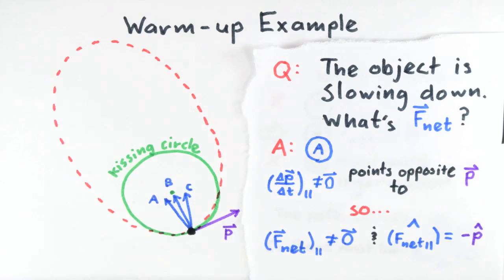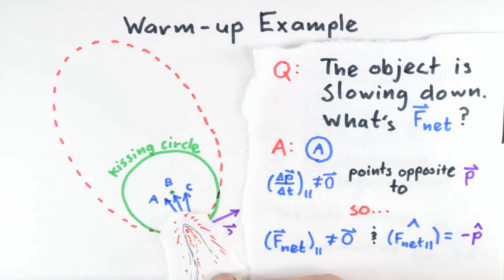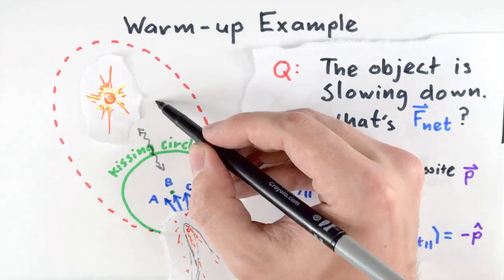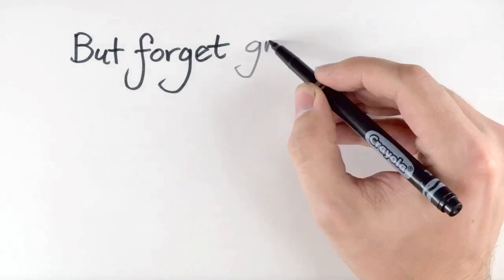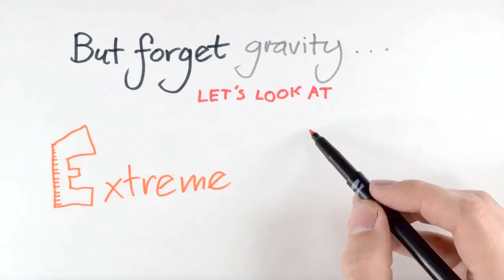Notice we learn all this about F net without knowing what in the surroundings is doing the pushing and pulling. Now, if we do have that kind of information, we can go further. For example, if our object is a comet interacting gravitationally with a star, then we could connect what we learned about F net parallel and F net perpendicular to Newton's Law of Universal Gravitation. We'll see more about that later when we prepare for our lab connecting the motion of a star to gravitational interaction with a black hole. For now, let's look at an observation of motion involving the physics of extreme sports that use ropes.